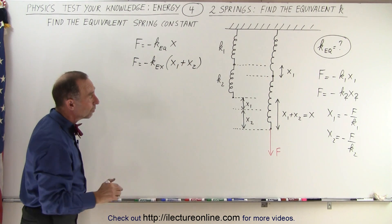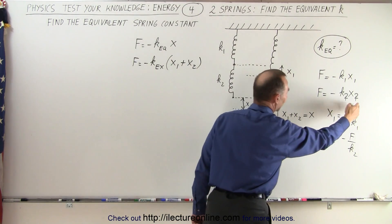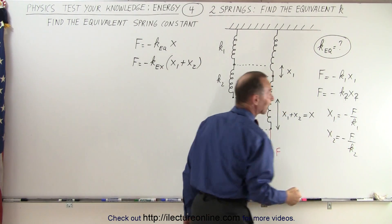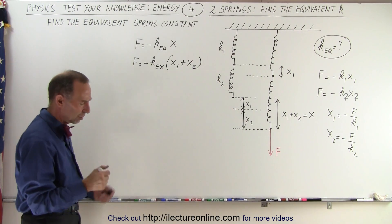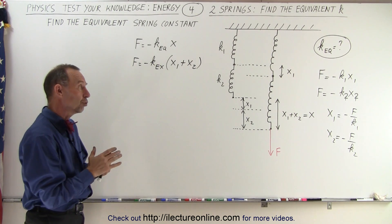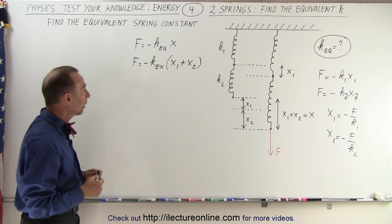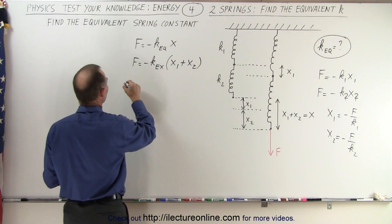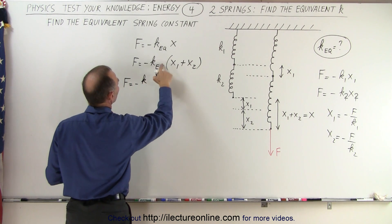Now what we can do is we can replace x1 and x2 in terms of minus f over k1 and minus f over k2, because that way we eliminate x and we can replace it with k1 and k2, because after all we want to express k, the equivalent k, in terms of k1 and k2.